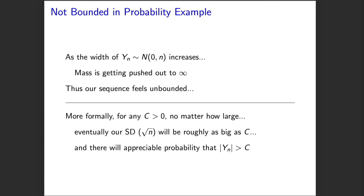As the width of random variable yn increases, mass is getting pushed out to plus and minus infinity, and in an intuitive way this makes it feel like our sequence is unbounded. More formally, for any c no matter how large, if we consider indices of our sequence large enough, eventually their standard deviations — the square root of the index — will be as big or bigger than c, and at that point we'll have appreciable probability that the random variable is greater than c in absolute value. That's how one would show that this example is not bounded in probability.